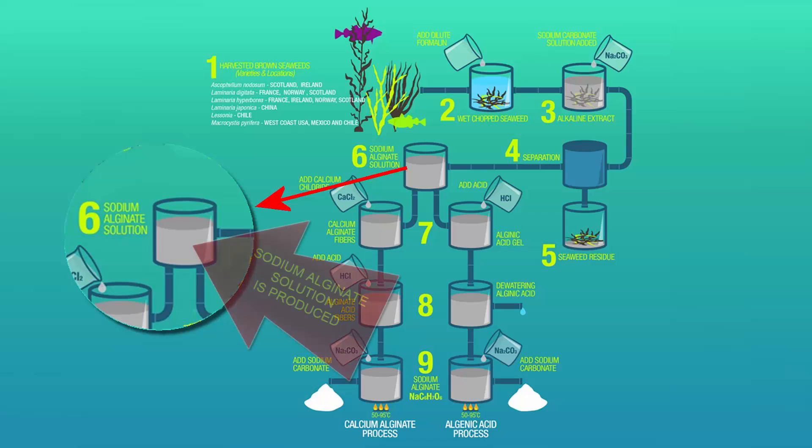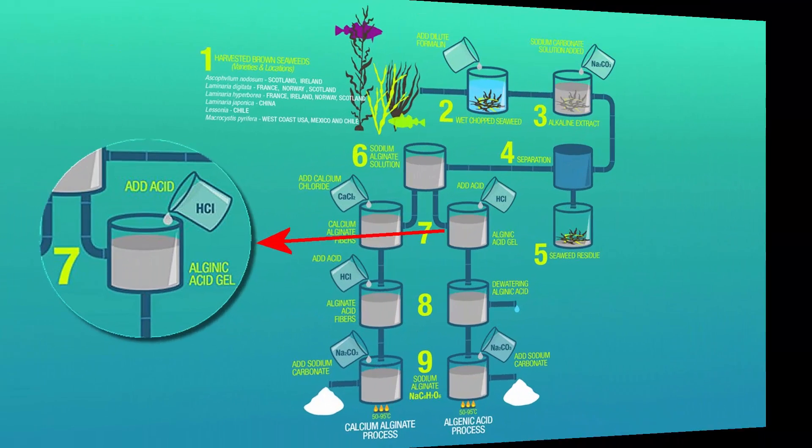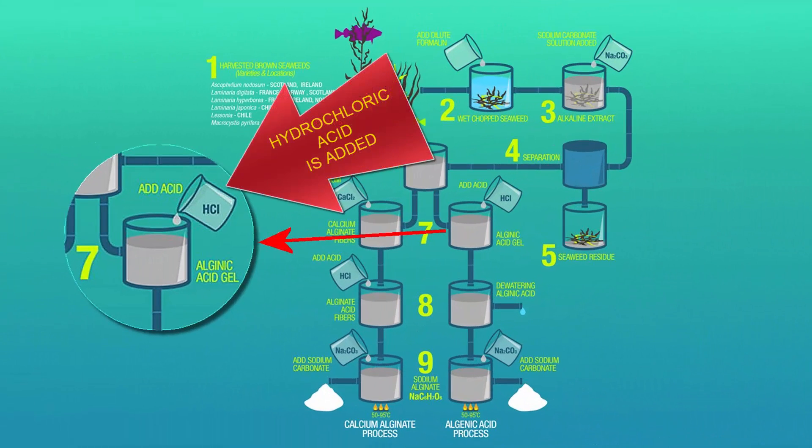In the sixth processing step, sodium alginate is produced. In the alginic acid process, hydrochloric acid is added to the sodium alginate creating a gel-like substance.